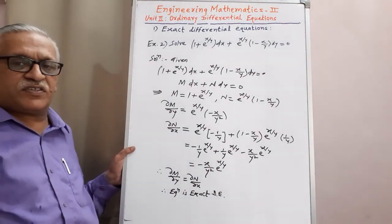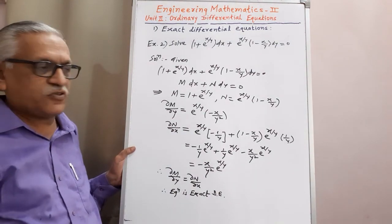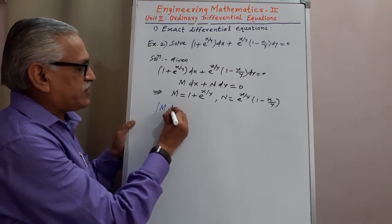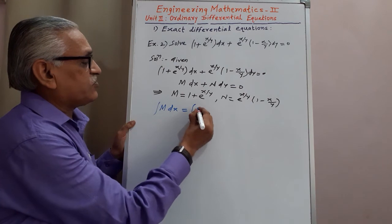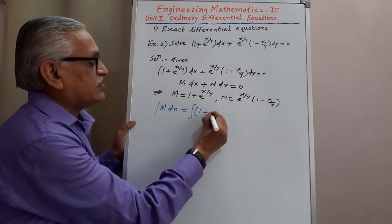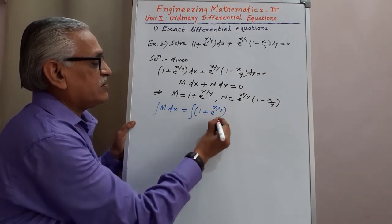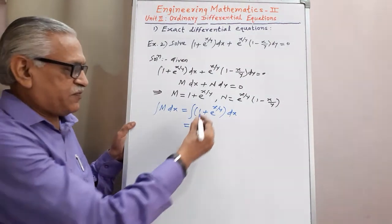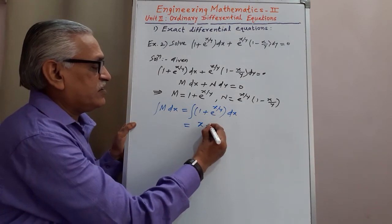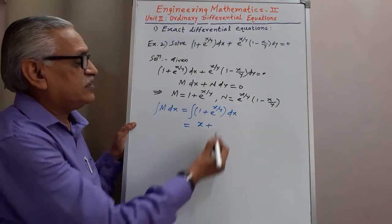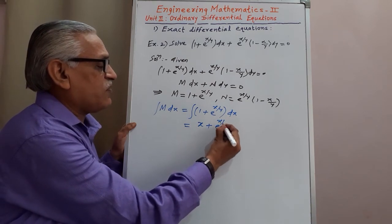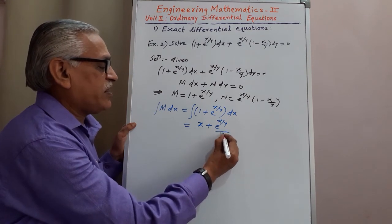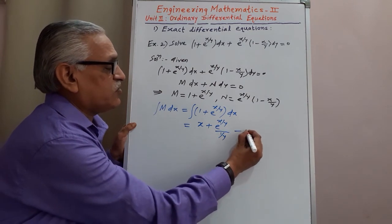Since it is exact, we apply the steps to find the solution. In the first step, we integrate M with respect to x: integration of (1 + e^(x/y)) dx. Integrating each term: integration of 1 gives x; integration of e^(x/y) with respect to x gives e^(x/y) divided by (1/y), which equals y · e^(x/y). We call this equation 1.